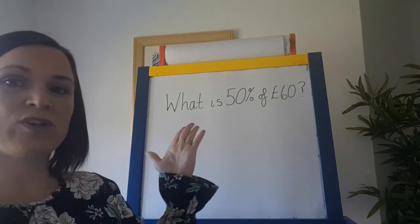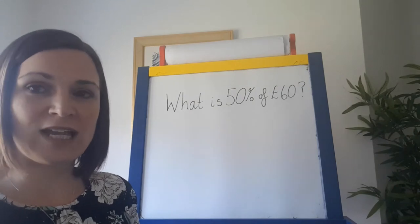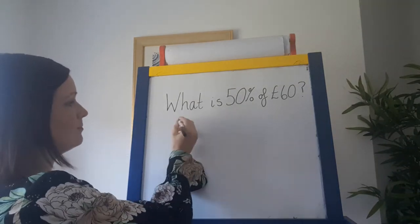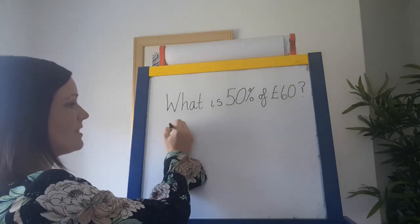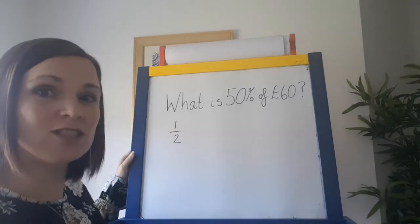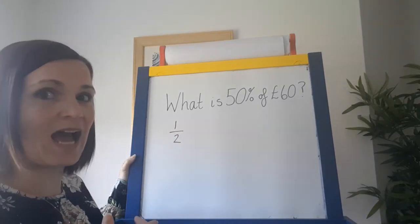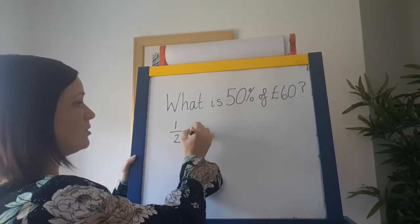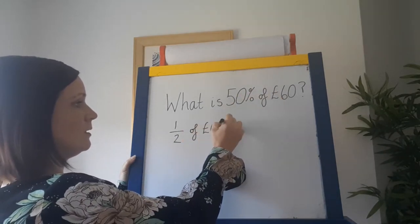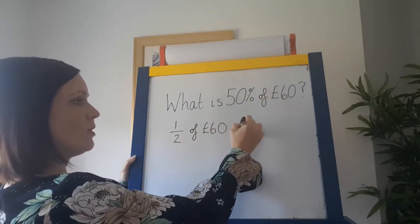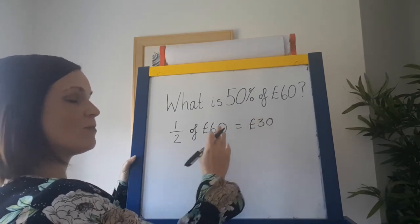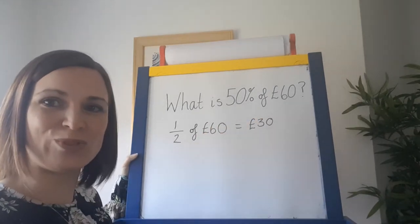So you might be given a question like: what is 50% of £60? 50% is a half — it's the same as 50 over 100, and 50 over 100 is a half. So half of £60 equals £30. To find half of something, you just divide it by two.